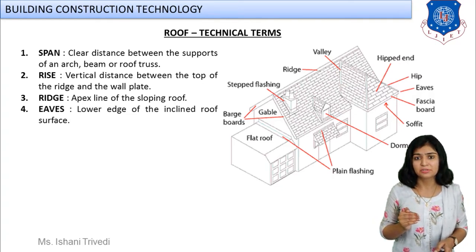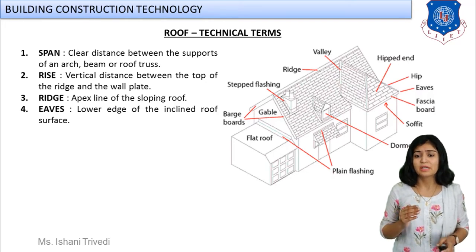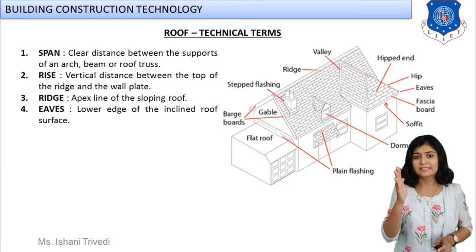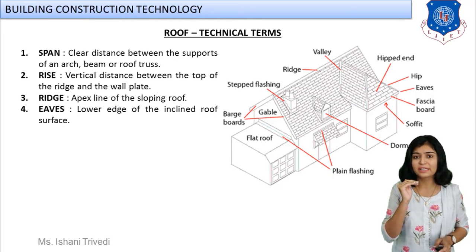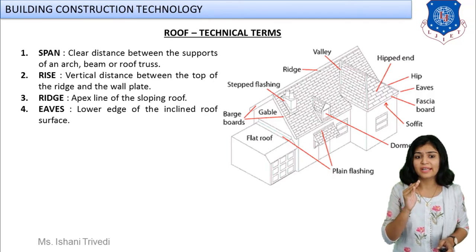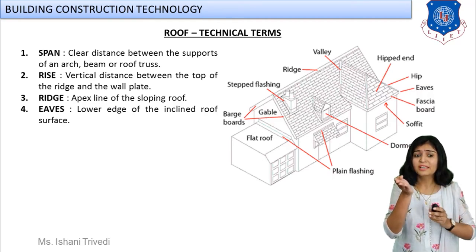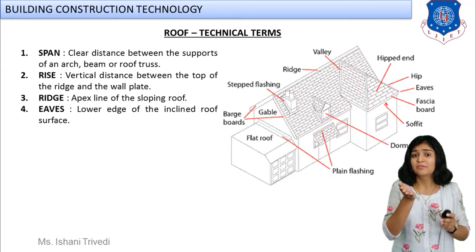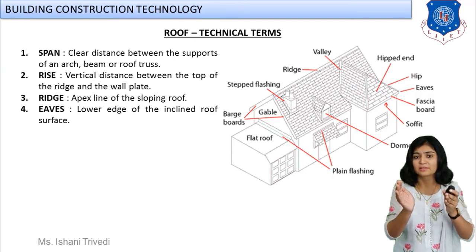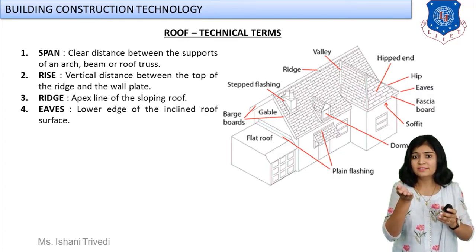Next, you have eaves. Can you spot the eaves in the image? It is provided near the hip. Eaves means the lower edge of the inclined roof surface. You have the inclined roof surface — it ends somewhere. The lower edge where your sloping roof ends is known as eaves.